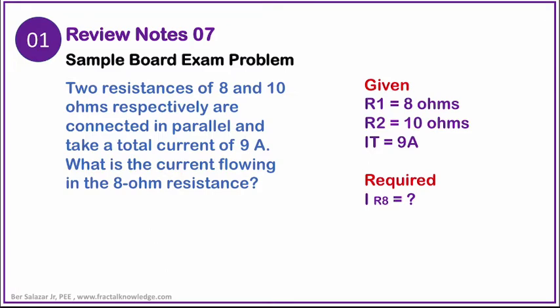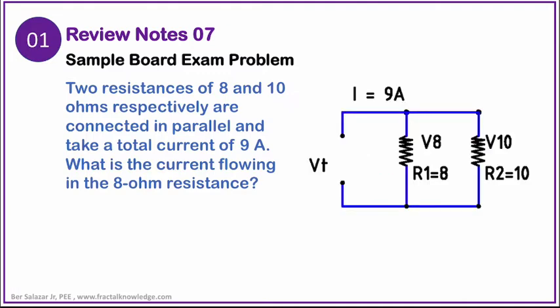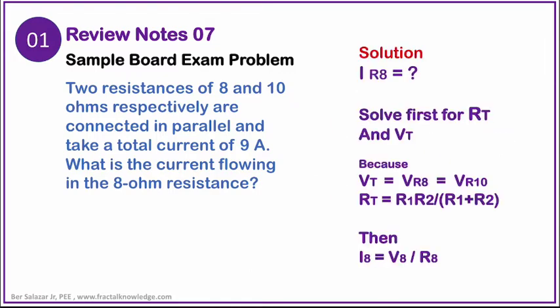We have 8 and 10 ohms respectively with a total current of 9 amperes, and we are asked to find the current in the 8-ohm resistor. Here's our circuit which we draw in our mind or on the back of the paper. To start our calculation, we cannot do the current divider rule because voltage total is unknown.